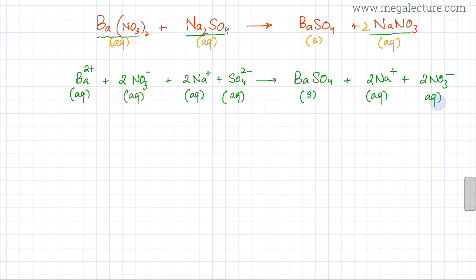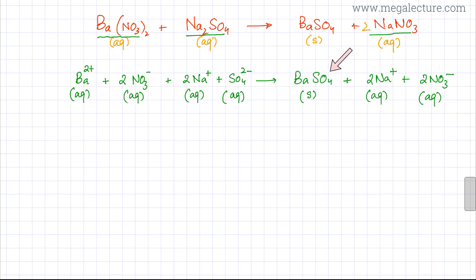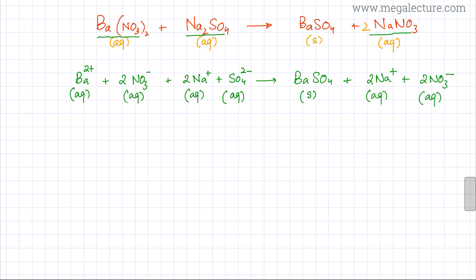The last thing is to find the spectator ions — the ones not undergoing any change in the reaction. Looking at barium ions: on the reactant side you have Ba²⁺(aq), and on the product side BaSO₄(s), which indicates barium took part in the reaction and changed form, so barium ions are not spectator ions. Looking at nitrate ions: there are two NO₃⁻(aq) on the reactant side and two NO₃⁻(aq) on the product side, meaning nitrate did nothing — it remained completely unchanged and was merely a spectator.